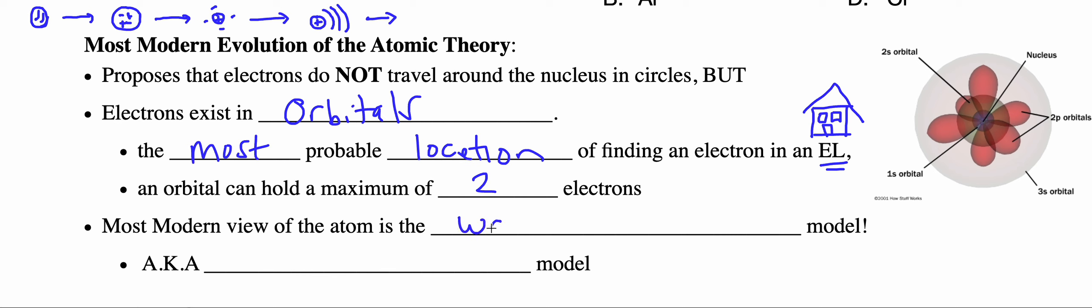It is also referred to as the electron cloud model. So we go from solid sphere, plum pudding, nuclear, seven energy levels to orbitals.